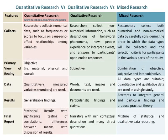In quantitative research, researchers collect numerical data, such as frequencies or scores, to focus on cause and effect relationships among variables. In qualitative research, researchers collect non-numerical information, such as descriptions of behavioral phenomena, how people experience or interpret events, and answers to participants' open-ended responses.